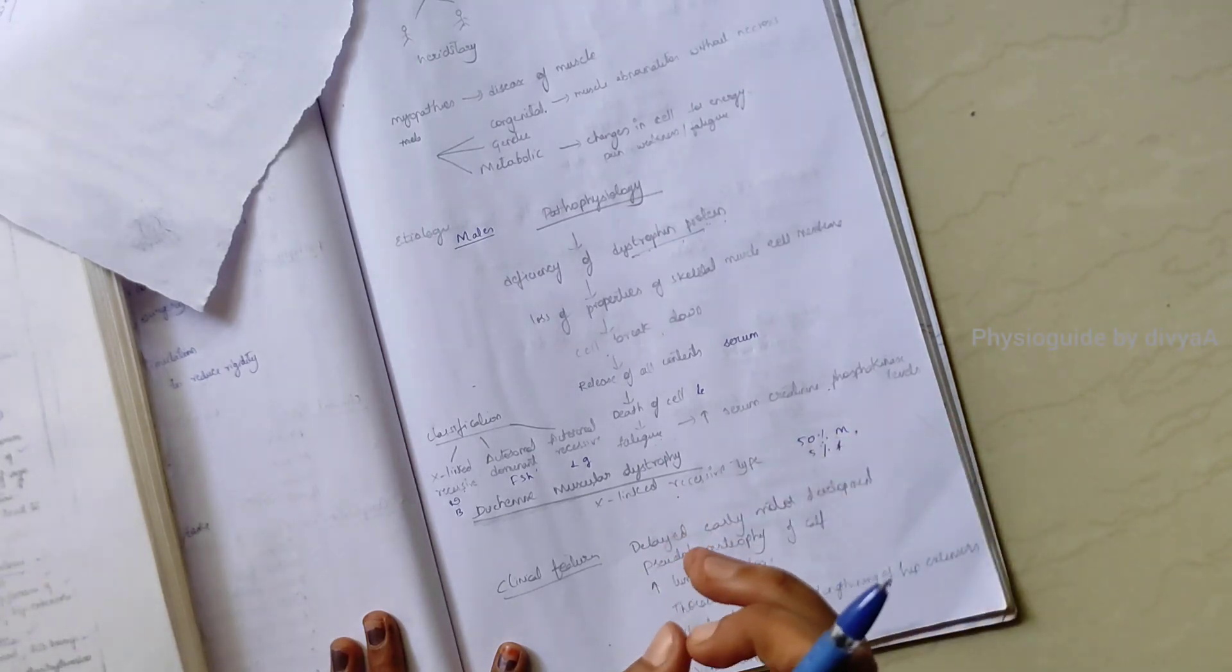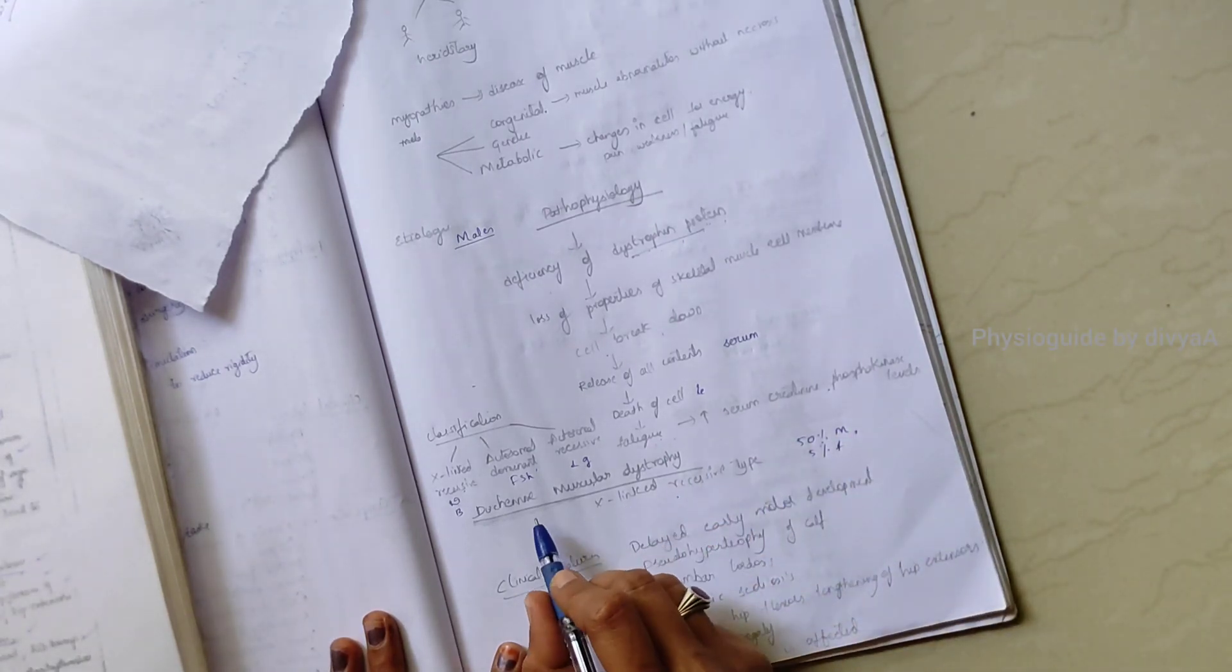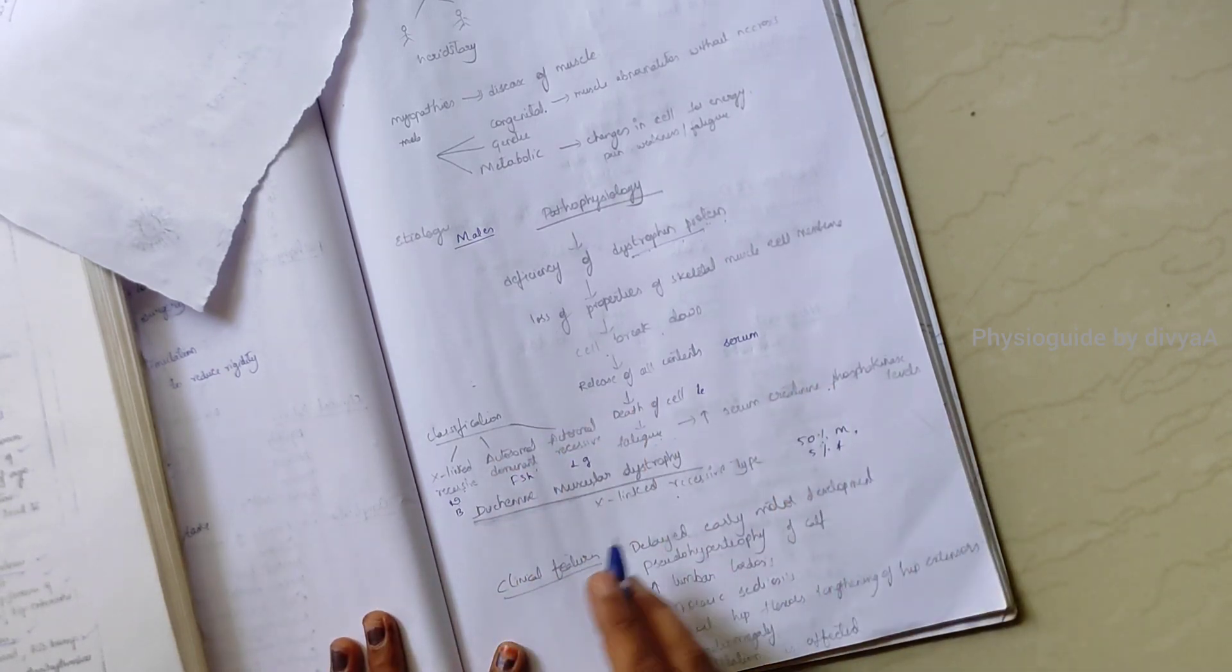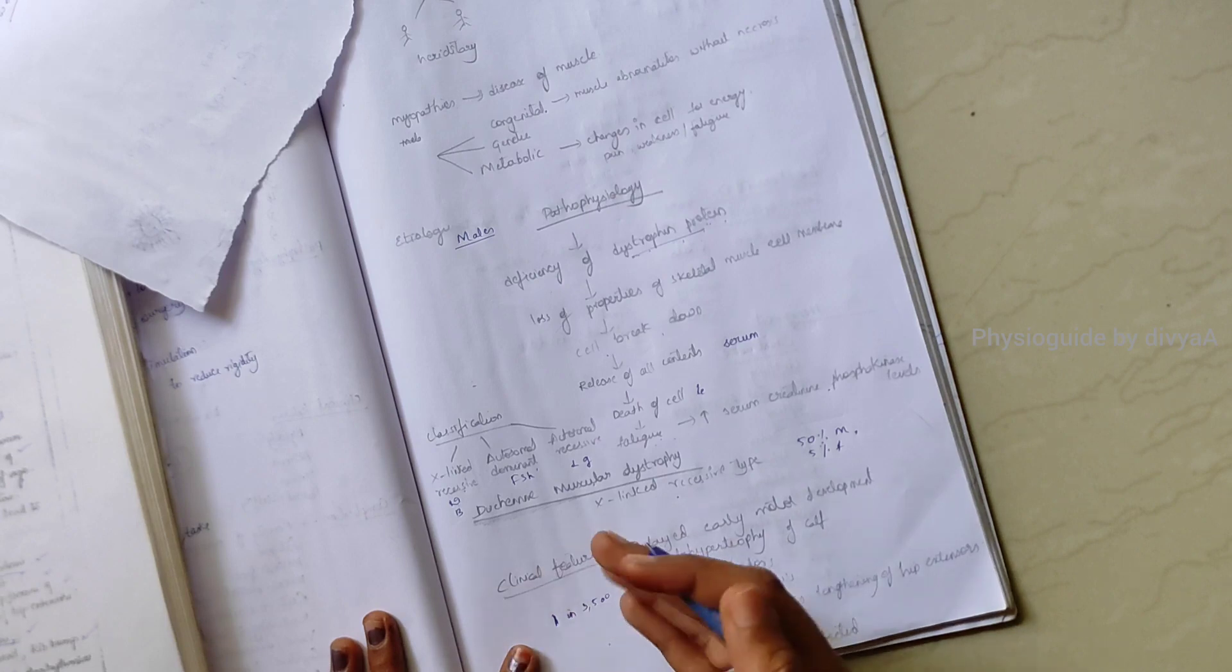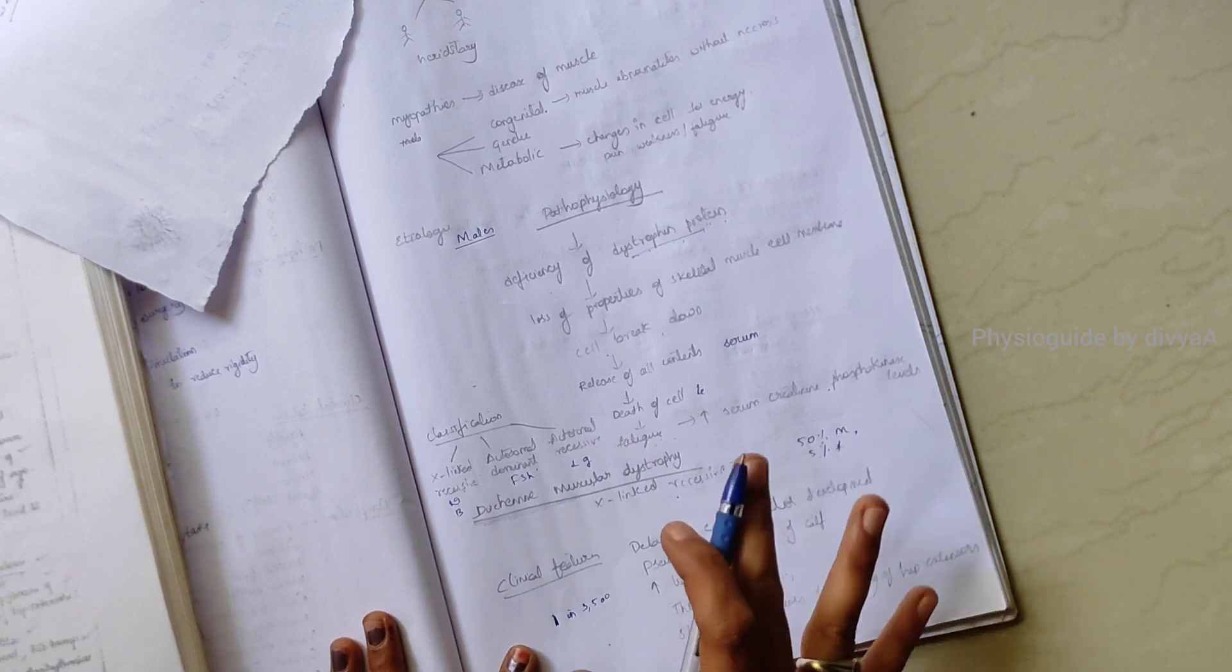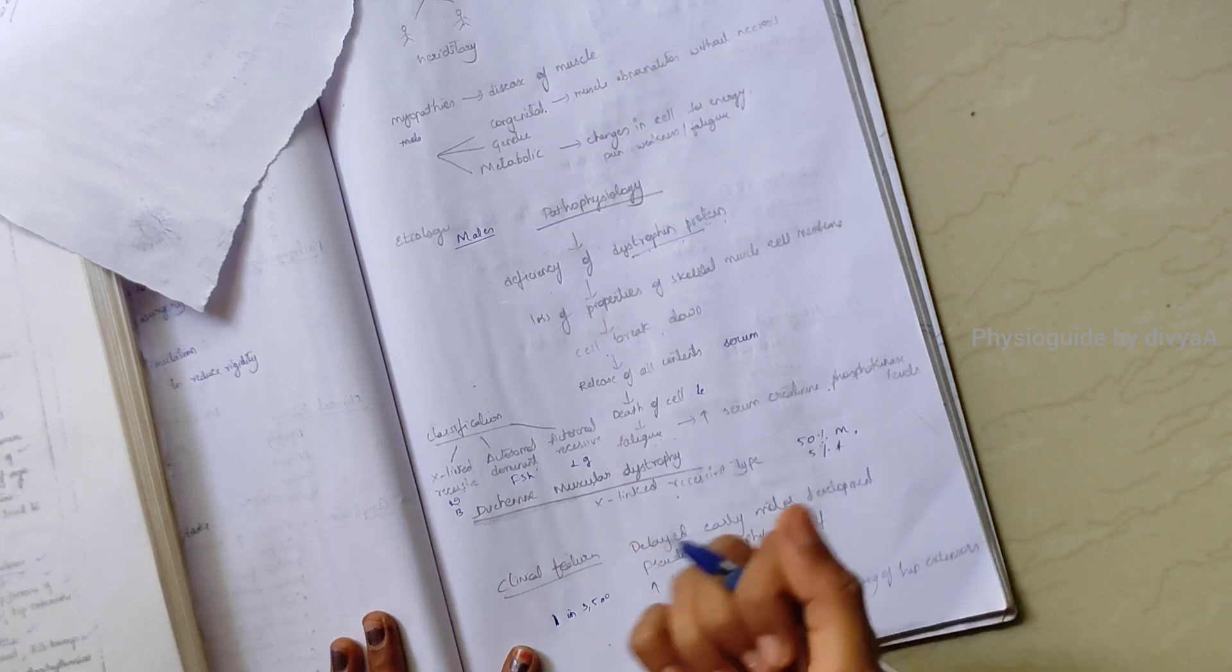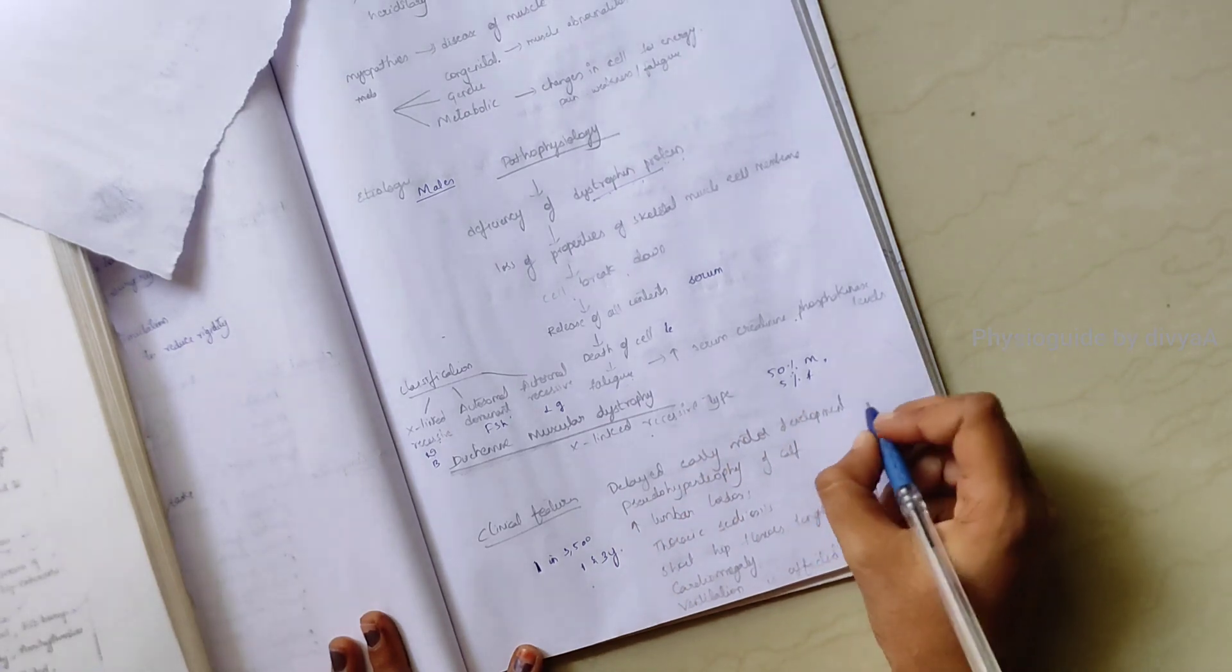This accounts for about 50 percent of sporadic cases, meaning it occurs occasionally in few places. Clinical features: incidence is one in three thousand to three thousand five hundred male births. Delayed early motor development, muscle development is delayed, noted in one to three years of age.